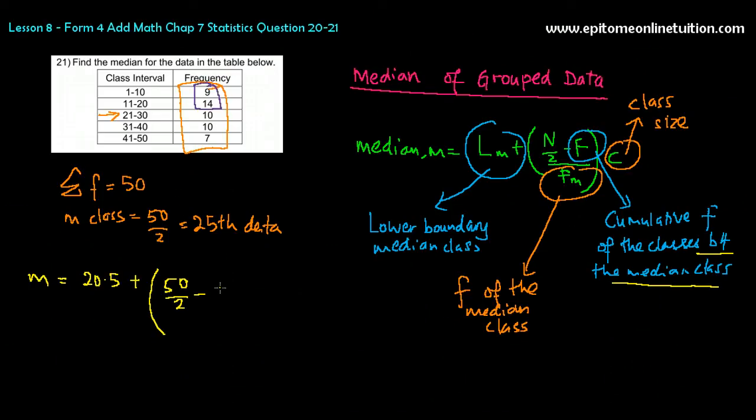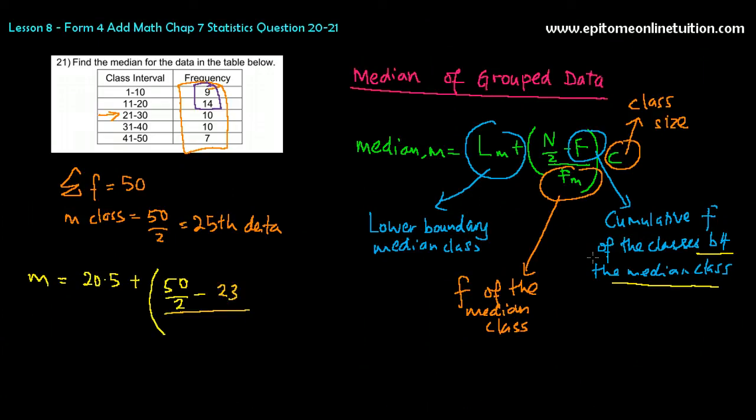So, that would be 23. Over small f is the frequency of the median class, which is 10. So, that's 10. Then, do not forget, multiply with the class size. The class size is 1 to 10.